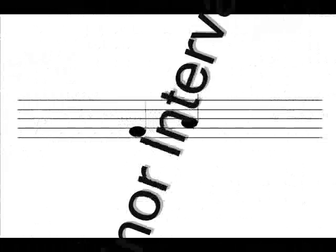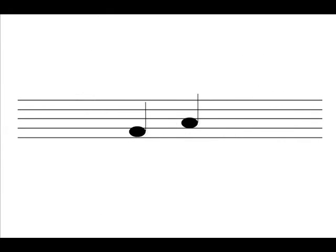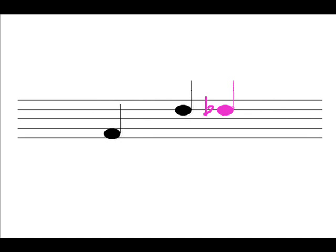Minor intervals are when a major interval is decreased by half a step. Perfect intervals cannot be minor. This is an example of a major 6th. To make this major 6th a minor 6th, you take the top note, D, and decrease it by half a step, which then makes the D a D-flat. You now have a minor 6th.